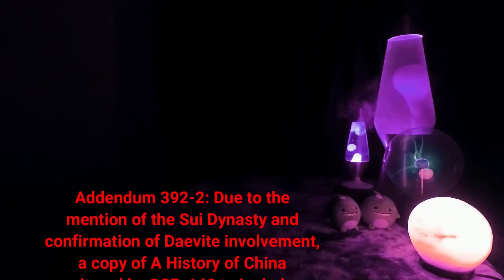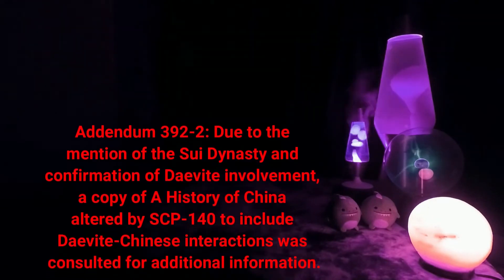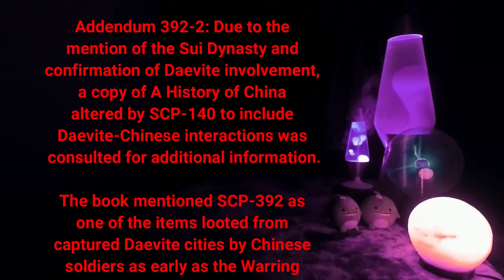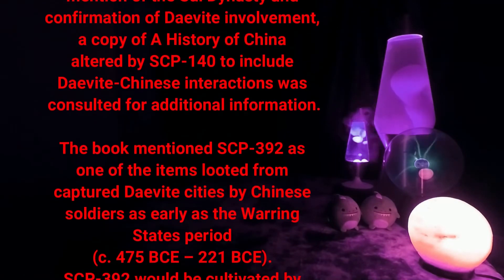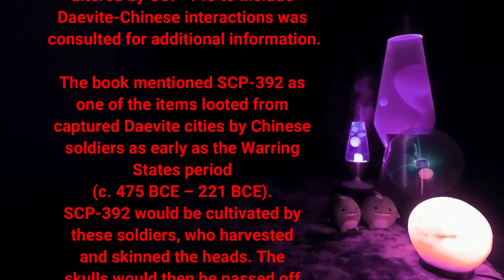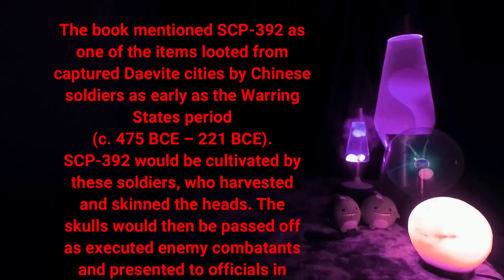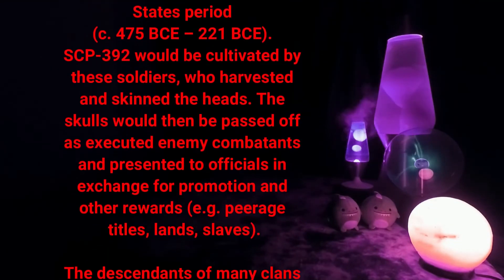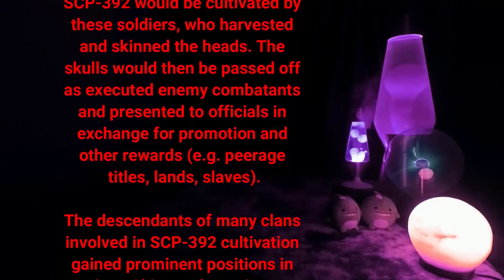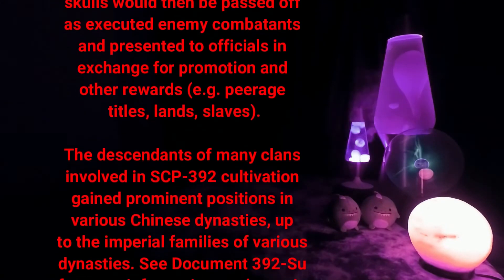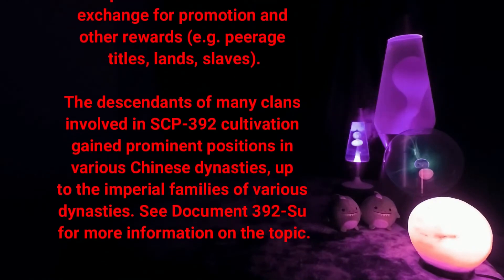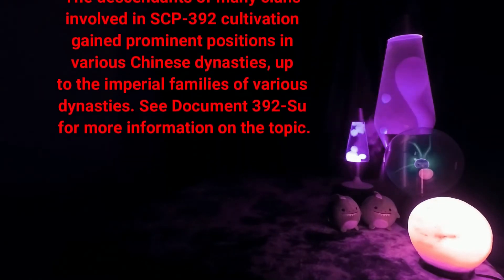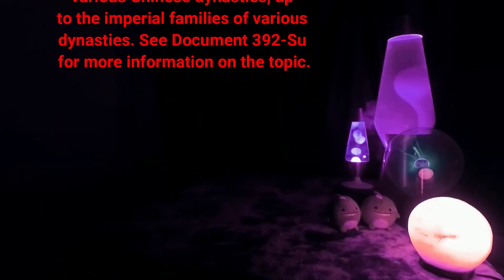Addendum 392-2: Due to the mention of the Sui dynasty and confirmation of D-Vite involvement, a copy of A History of China altered by SCP-140 to include D-Vite–Chinese interactions was consulted for additional information. The book mentioned SCP-392 as one of the items looted from captured D-Vite cities by Chinese soldiers as early as the Warring States period (see 475 BCE–221 BCE). SCP-392 would be cultivated by these soldiers, who harvested and skinned the heads. The skulls would then be passed off as executed enemy combatants and presented to officials in exchange for promotion and other rewards — for instance, peerage titles, lands, and slaves. The descendants of many clans involved in SCP-392 cultivation gained prominent positions in various Chinese dynasties, up to the imperial families of various dynasties. See Document 392-2 for more information.